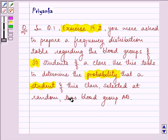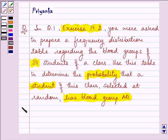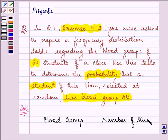at random has blood group AB. So the information which is given to us in this question said there were 4 blood groups which were given to us and the number of students.